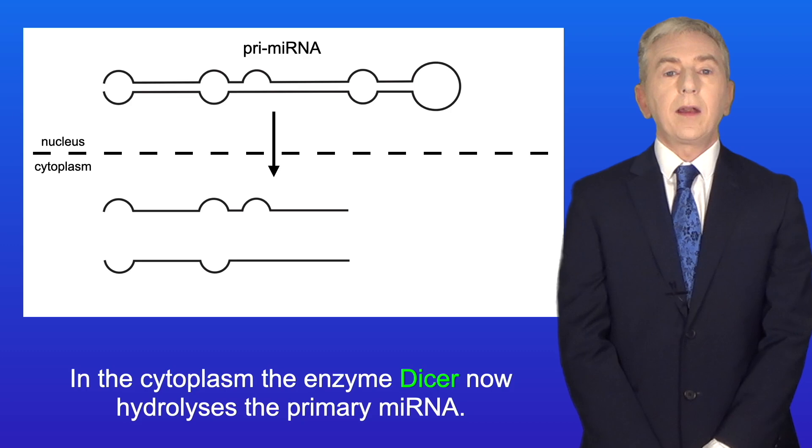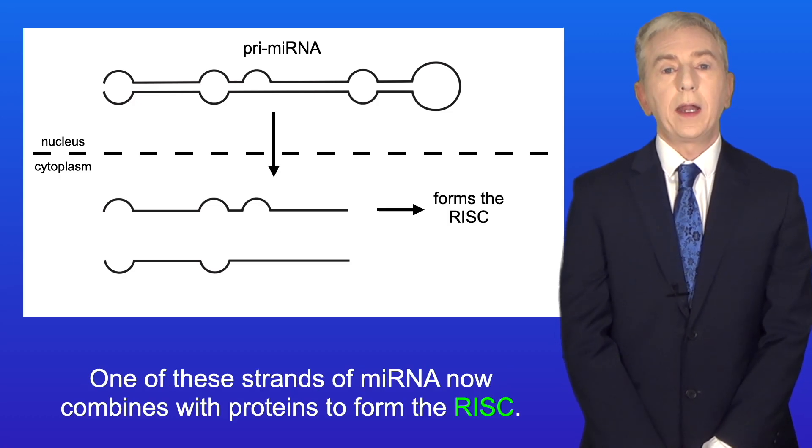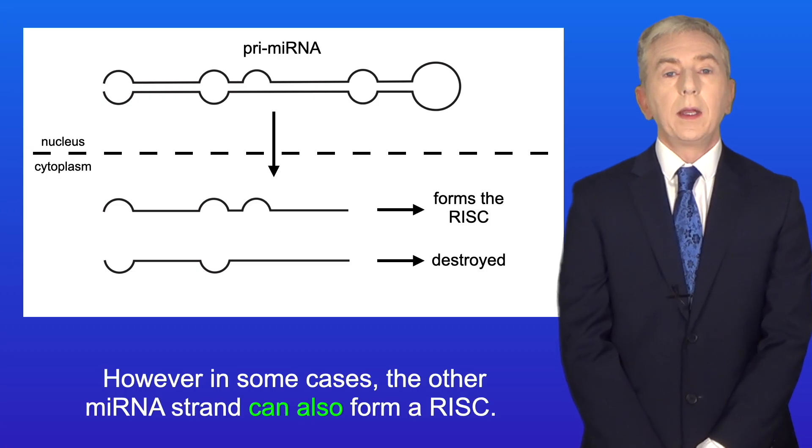In the cytoplasm, the enzyme DICER now hydrolyzes the primary miRNA, and we now have two separate strands of miRNA. One of these strands of miRNA now combines with proteins to form the RISC, and the other miRNA strand is usually destroyed. However, in some cases, the other miRNA strand can also form a RISC.